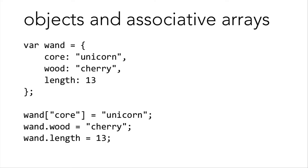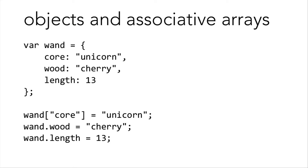Now let's take a look at objects and associative arrays in JavaScript, which for all intents and purposes are interchangeable. If I wanted to make an object — a variable called a wand — I would declare it, and inside those curly braces, I would specify the core is unicorn, the wood is cherry, and the length is 13. I can also access values of objects using associative array notation: wand['core'] set equal to unicorn. Or I can use the dot operator: wand.wood equals cherry. So you see that associative arrays and objects in JavaScript are interchangeable and will come in quite handy.